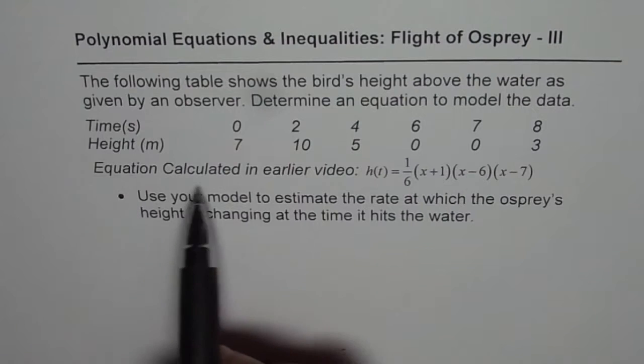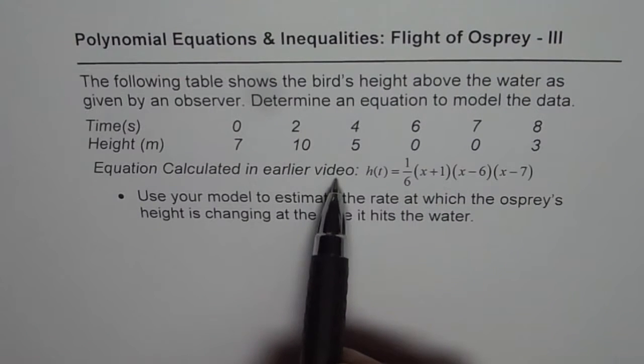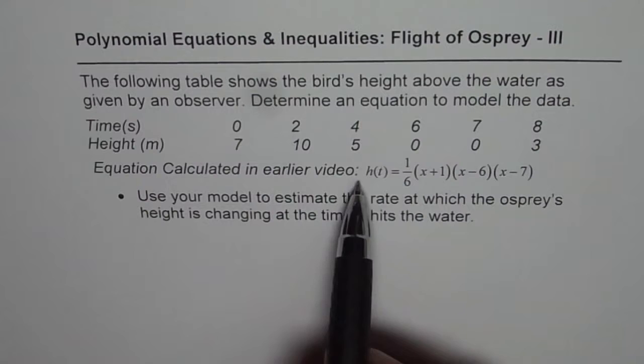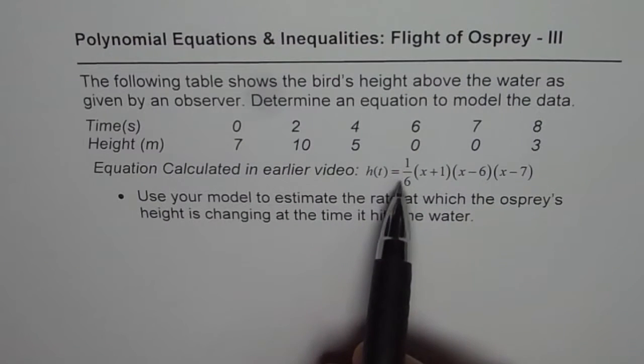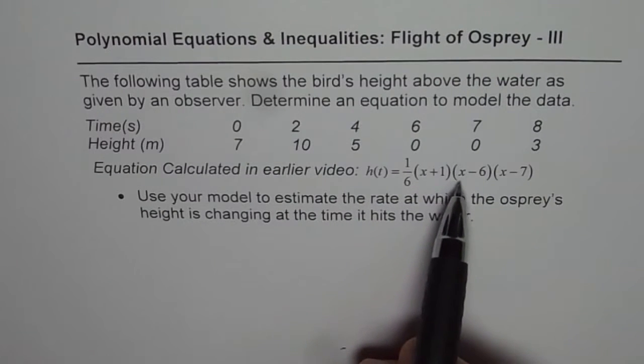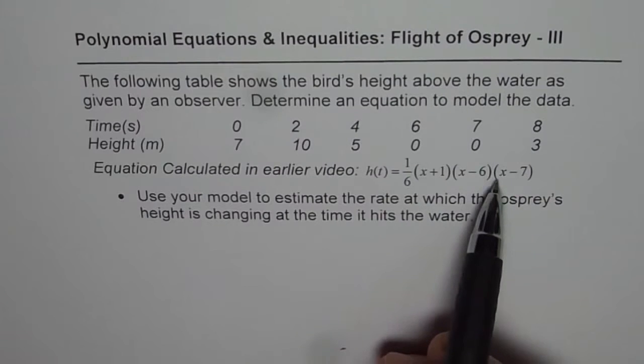0, and 3. We calculated in the earlier videos that this height can be modeled as h(t) = (1/6)(x+1)(x-6)(x-7).